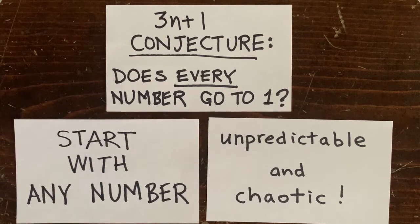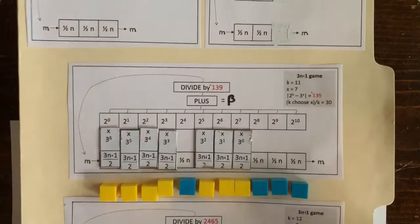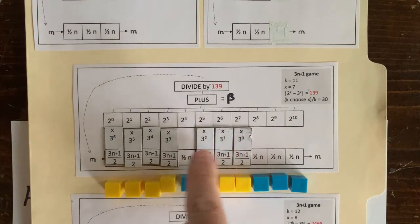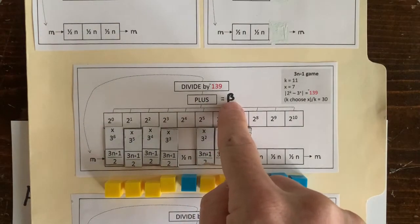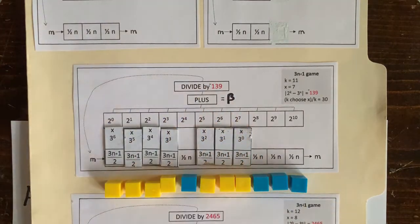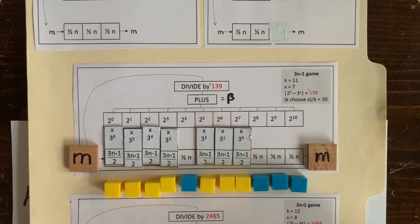Welcome back. We recently found an incredibly simple formula that helps us hunt for 3n plus 1 loops. To create a loop of length k, we select an operation sequence, we solve for the m that loops back on itself. To get that m, we calculate a beta value then divide by 2 to the k minus 3 to the x. If m's an integer, then that operation sequence gives us an integer loop.